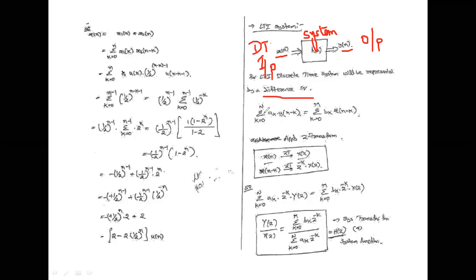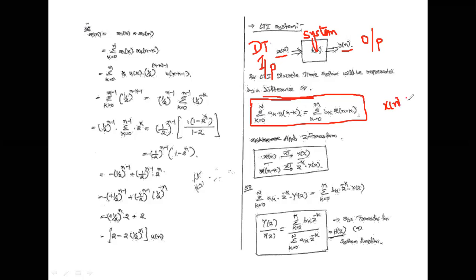The difference equation is: sum of k equal to zero to N of a_k · y(n-k), equal to sum of k equal to zero to M of b_k · x(n-k). Here X is the input value and Y is the output function. When k equals zero we get x(n), and when k equals one we get x(n-1), and so on. It depends upon the present and the past inputs.